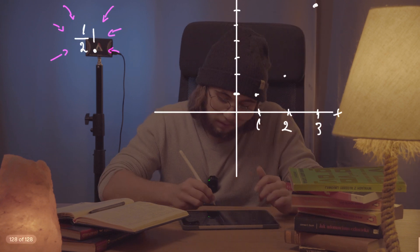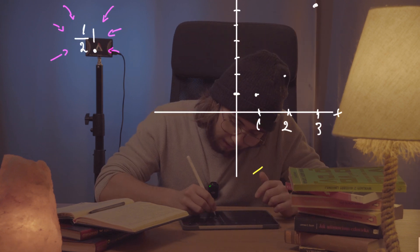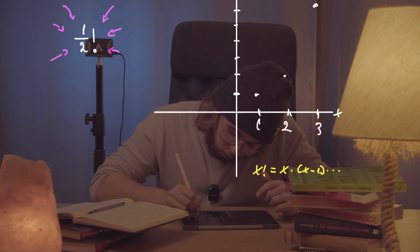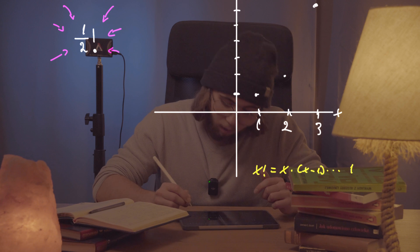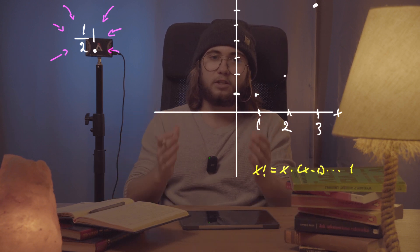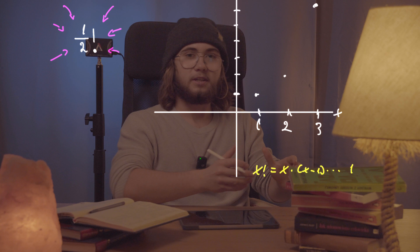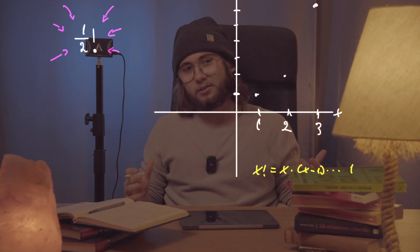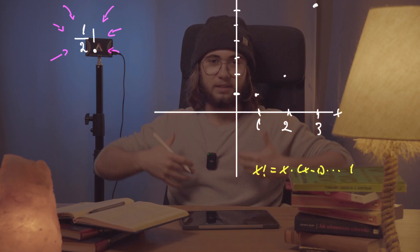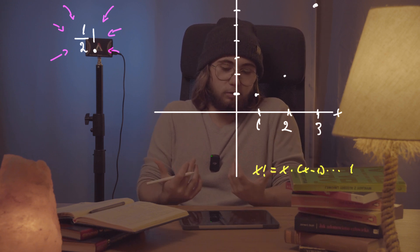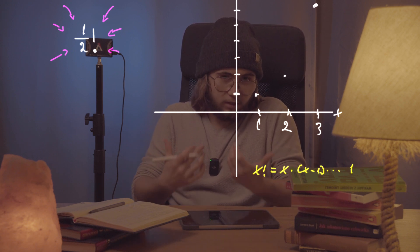The factorial of x is equal to x multiplied by (x−1) all the way down to 1 — it's just the product of consecutive integers up to x. So how are we supposed to calculate the factorial of a half, which is not an integer at all?